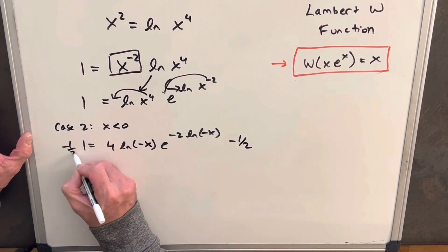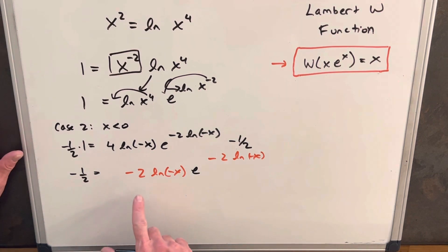Now we have the input the way we want it. We have our minus 2 ln negative x, so we're in the exact right form to use our Lambert W function again.